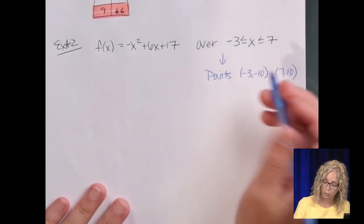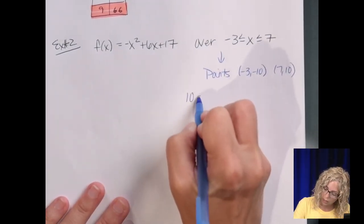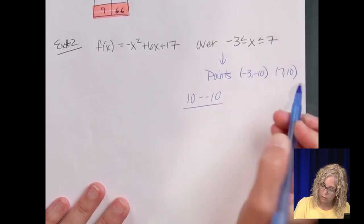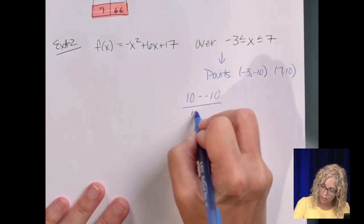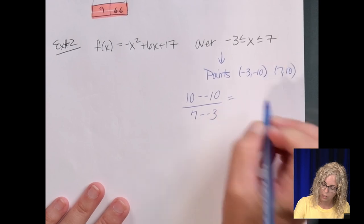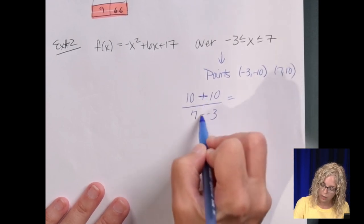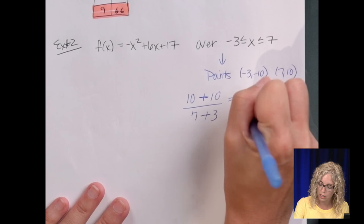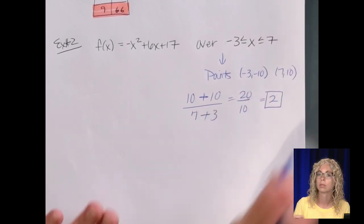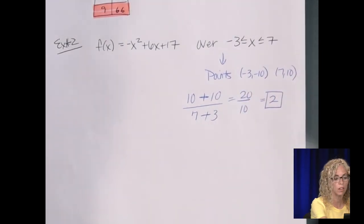So y2 minus y1, so 10 minus negative 10, don't forget the double negative, and then 7 minus negative 3. So 2 negatives turn into a positive, so we end up with 20 over 10, which is 2. So if they give you the function, no worries, just go to the calculator to get the table of points.